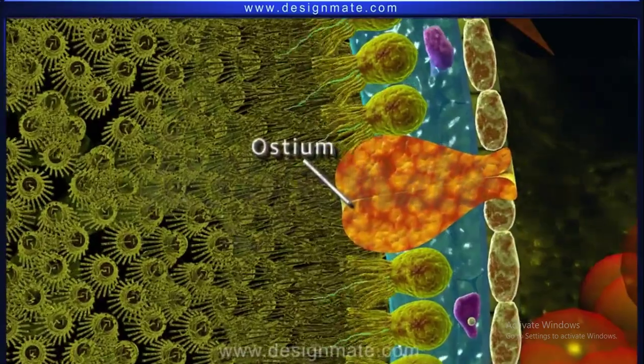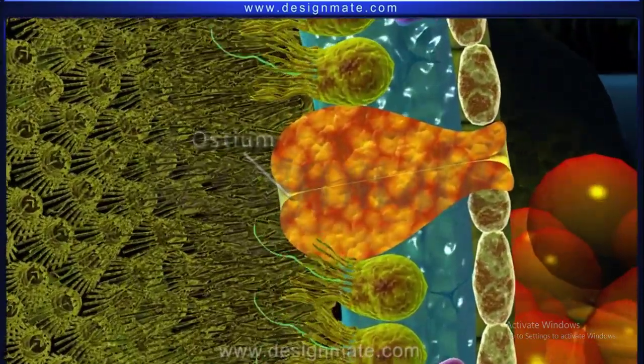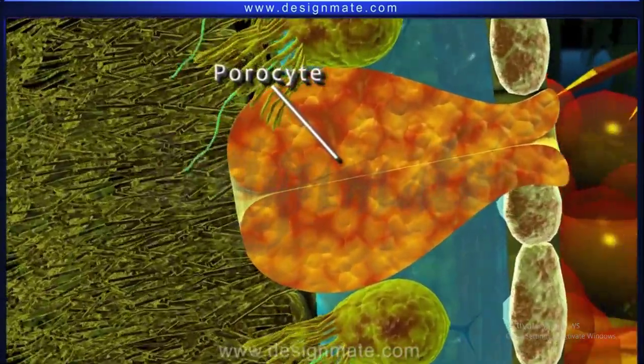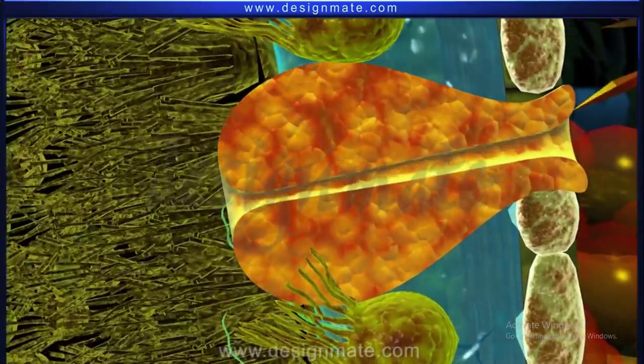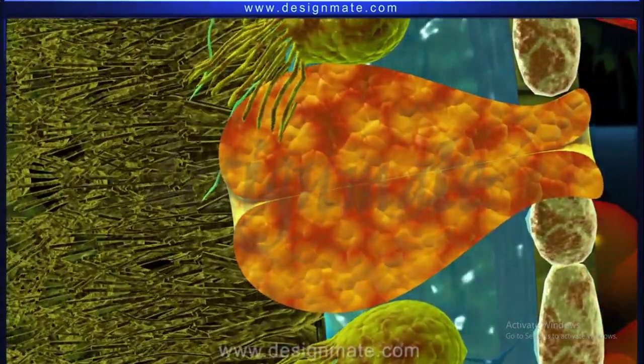The Osculum is surrounded by donut-like cells called Porocytes. These Porocytes open and close to control the flow of water.